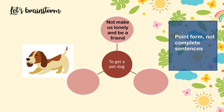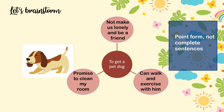Reason one: if we get a dog it will not make us lonely and will be a good friend. Reason two: we promise to clean our bedroom. Reason three: we could walk and exercise with him. Now that we have brainstormed, we have our opinion and our three reasons — let's put this into the structure.